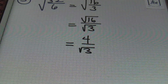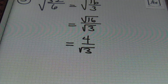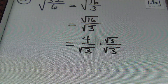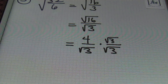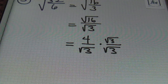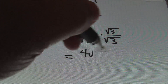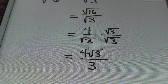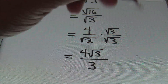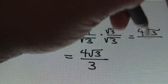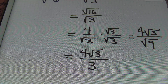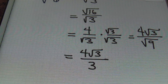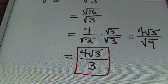Now I have a number over a square root, so I need to rationalize the denominator. When your index is two, multiply by that exact same square root to eliminate it from the denominator. Multiplying straight across gives me four times the square root of three in the numerator. The square root of three times the square root of three equals the square root of nine, which is three. So the final answer is four square root of three over three.